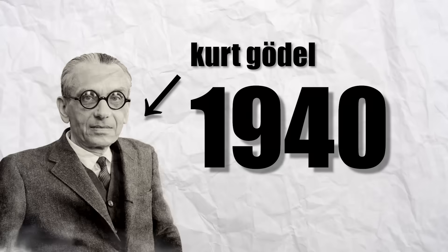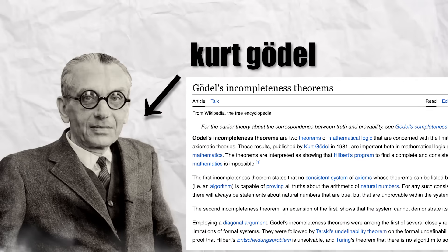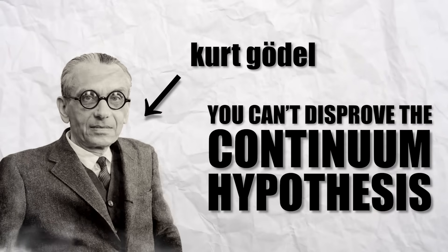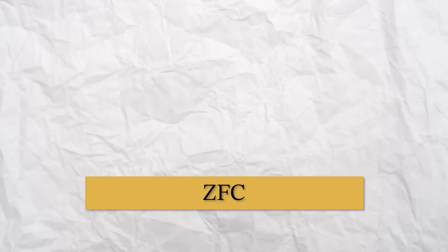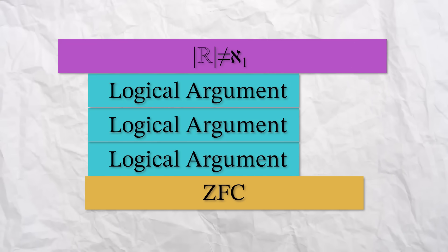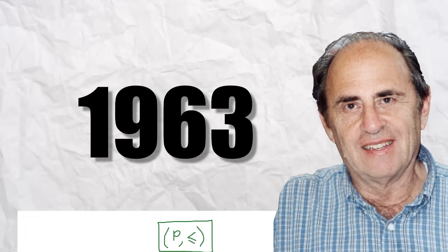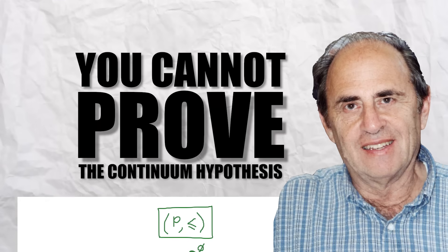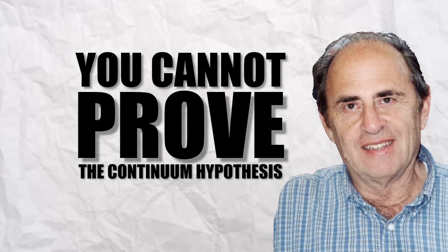In 1940, Kurt Gödel, yes the incompleteness theorem guy, proved that you can't disprove the continuum hypothesis. Or in other words, assuming ZFC doesn't contradict itself, there's no contradiction in saying the cardinality of the real numbers is exactly Aleph 1. But he still hadn't proved that they're equal yet, and that's when we introduced Paul Cohen. In 1963, using a technique called forcing, Cohen proved that you cannot prove the continuum hypothesis either.